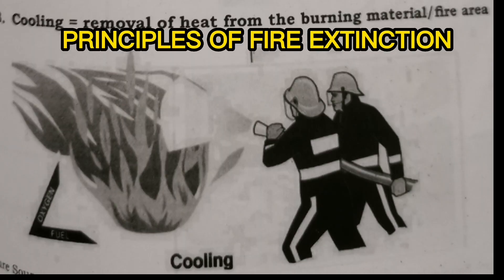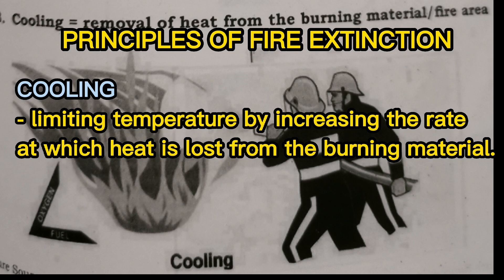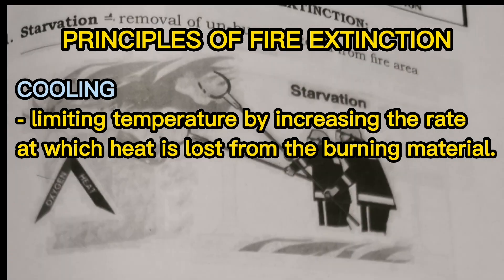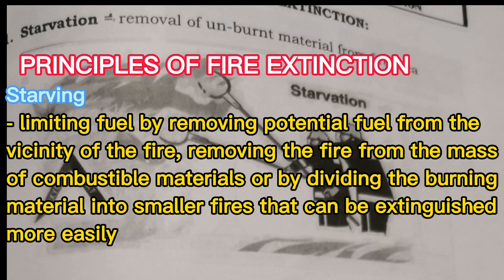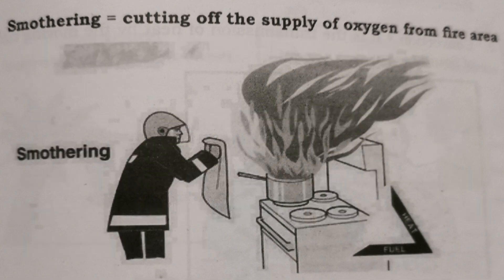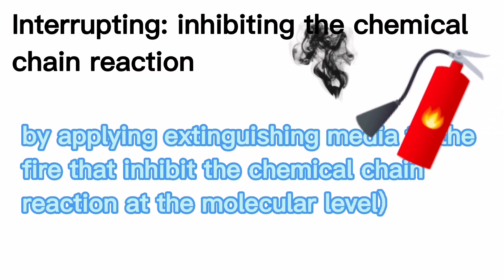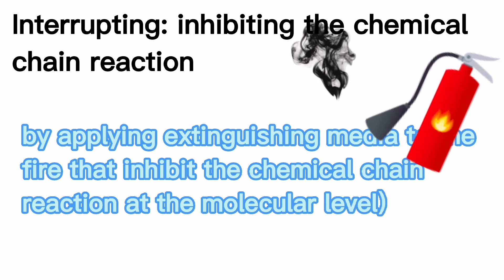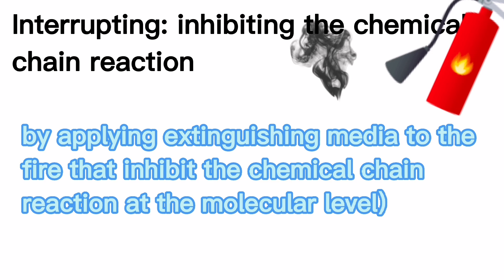Principles of fire extinction: Cooling — limiting temperature by increasing the rate at which heat is lost from the burning material. Starving — limiting fuel by removing potential fuel from the vicinity of the fire, removing the fire from the mass of combustible materials, or dividing the burning material into smaller fires that can be extinguished more easily. Smothering — limiting oxygen by preventing air from reaching the seat of the fire, allowing the combustion process to reduce the oxygen content in the confined atmosphere until it extinguishes itself. Interrupting — inhibiting the chemical chain reaction by applying extinguishing media to the fire that inhibit the chemical chain reaction at the molecular level.